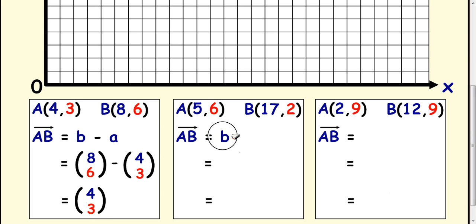Next one: again, b minus a. We underline because these are in bold - that's the position vector from the origin, which is the same as the coordinate. Same idea here, and then just take them away: 17 take away 5 is 12, 2 take away 6 is -4.